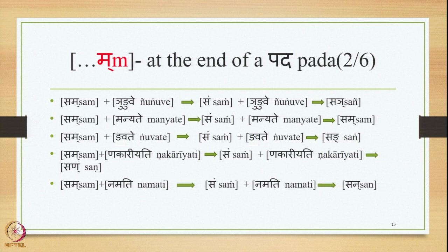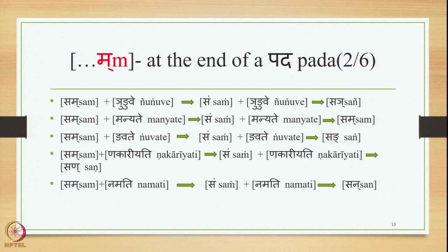Sam plus Ngavate: 8.3.23 applies and substitutes Ma at the end of the pada by Anuswara, giving Sam-Anuswara-Na. Then this Anuswara is substituted by the nasal Parasavarana of Ng, which is Ng itself, yielding Sam plus Ngavate.